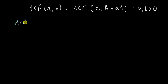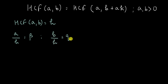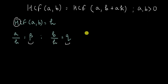Let me say that HCF of A and B is small h. This means that H divides A, so A divided by H will be some integer P, and H also divides B, so B divided by H will be some other integer Q. That is what a factor is — H is a factor of A and B. Now the property of H in HCF is that it is the highest common factor, which means P and Q will not have any other factors in common, because if they did, that common factor could join H and give us an even higher factor. So P and Q are co-primes — their HCF is 1.